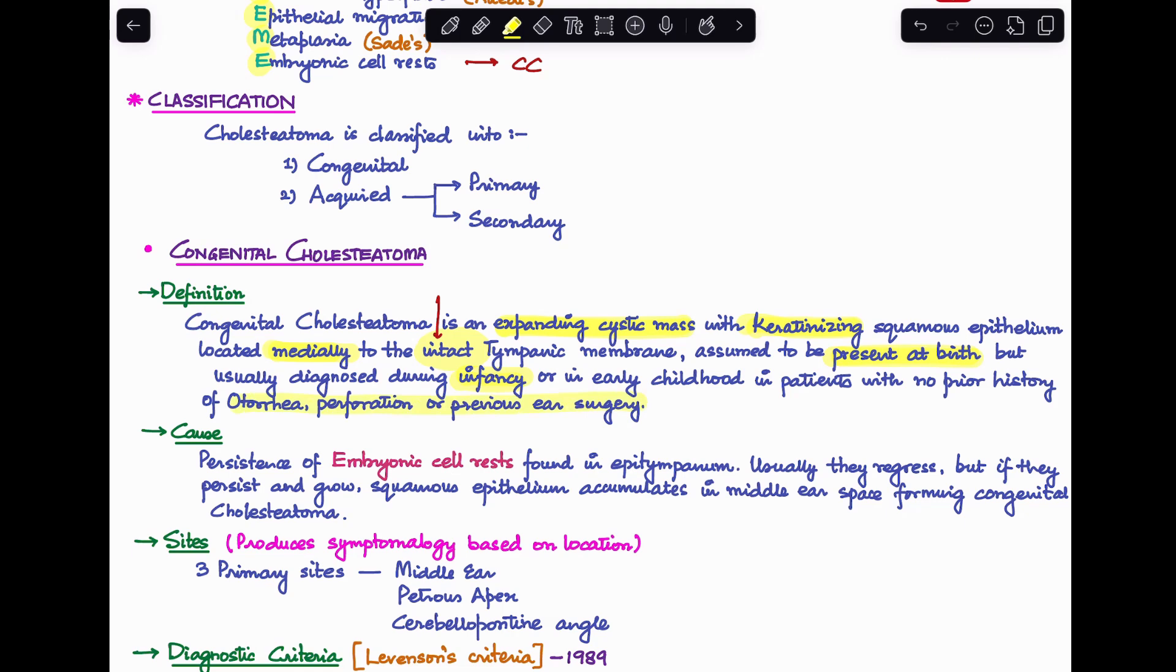The cause behind congenital cholesteatoma, as I've already mentioned, is persistence of embryonic cell rests found in the epitympanum. Usually they regress in a normal individual, but if they end up persisting and growing, the squamous epithelium accumulates in the middle ear space, leading to formation of congenital cholesteatoma.